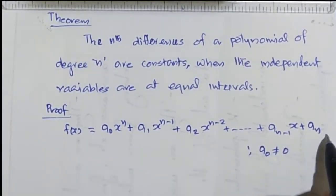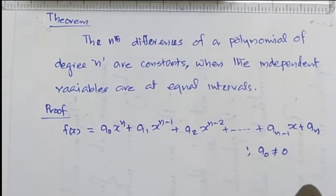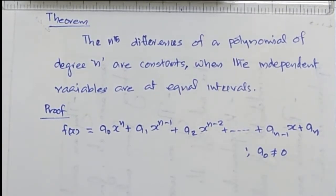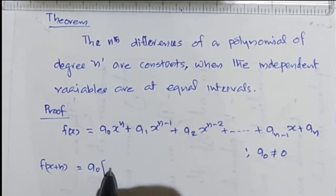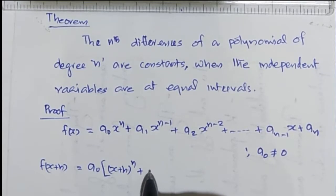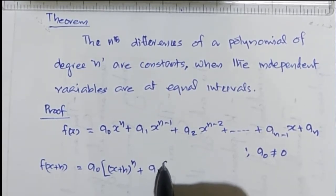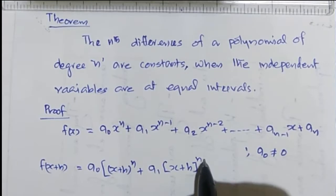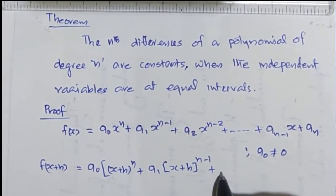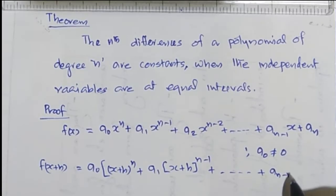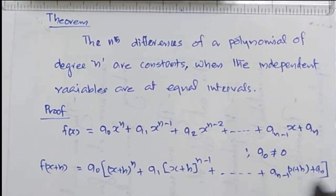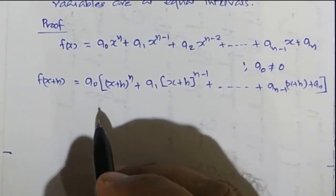Now f(x+h) would be a0 (x+h)^n + a1 (x+h)^(n-1) + ... + a(n-1)(x+h) + an. This is f(x+h).